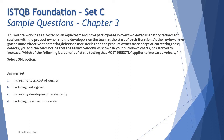Option C is 'increasing development productivity.' Velocity is more about development activity and is certainly being increased, so this seems relevant. Velocity is a way of measuring productivity in agile development — the number of story points delivered. Option D is 'reducing total cost of quality' — but the benefit mentioned deals with increasing overall development team productivity, so D is not directly relevant. There is a slight contradiction though, because as per the scrum guide, velocity relates to the whole team, not just development.